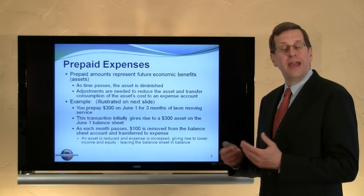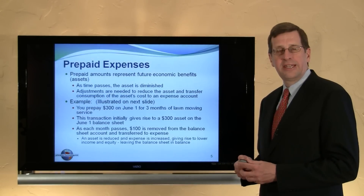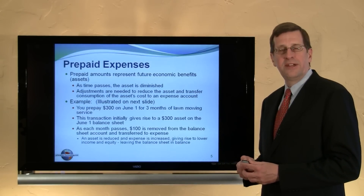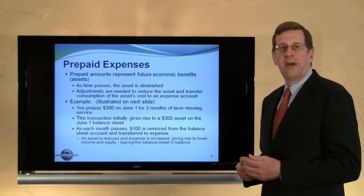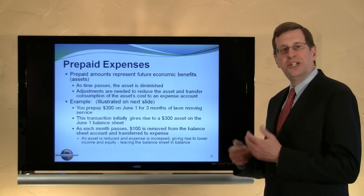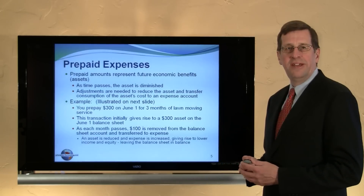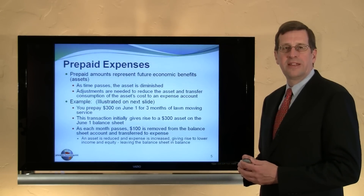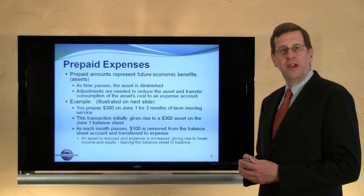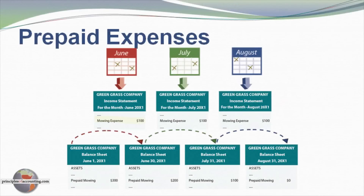As each month passes, $100 of the benefit is consumed — the lawn is mowed or maintained for that period of time. This will require an adjustment at the end of each month to reflect the consumption of the $300 prepaid asset.